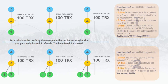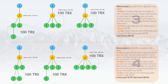Let's calculate income with an example. You personally invited 4 referrals and have activated level 1. Referral number 1 paid 300 TRX to register. In binary, they stand under you in the first free place out of 2 — you get 100 TRX. In trinary, they stand under you in the first free place out of 3 — you get 100 TRX. In Lina, they stand under you in the first free place from unlimited — you get 100 TRX. Total: you get 300 TRX.